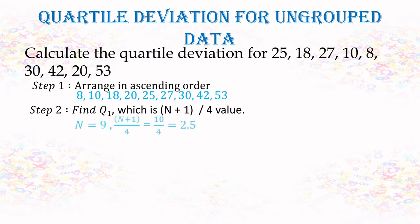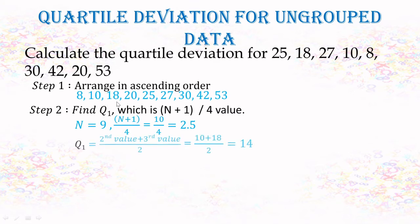Here we have nine different values. Substituting n=9 into the formula gives position 2.5, which means we take the average of the second and third values. The second value is 10 and the third value is 18, so the average is 14. Therefore Q1 equals 14.